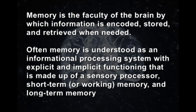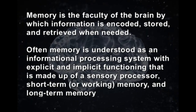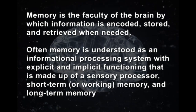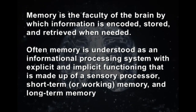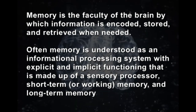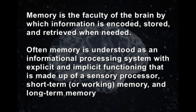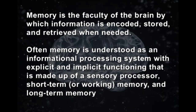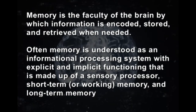What exactly is memory? Memory is a faculty of the brain by which information is encoded, stored, and retrieved when we need it. Often memory is understood as an information processing system with explicit and implicit functioning that is made of sensory processors, short-term memory, and long-term memory.